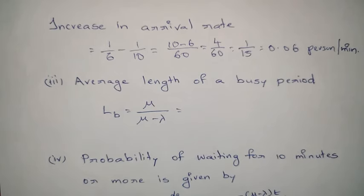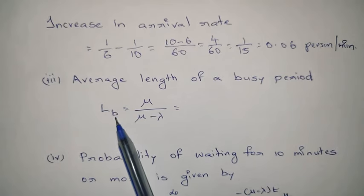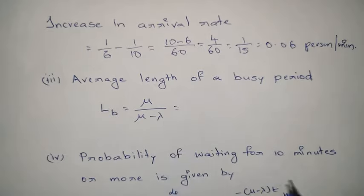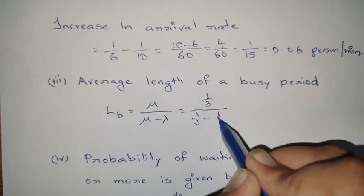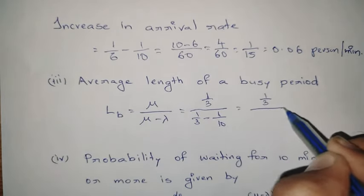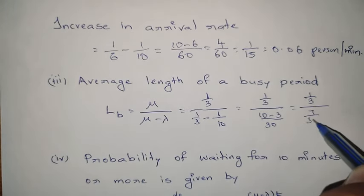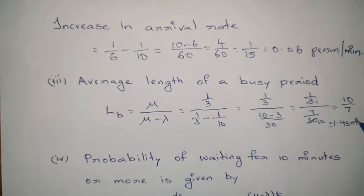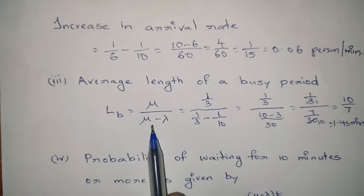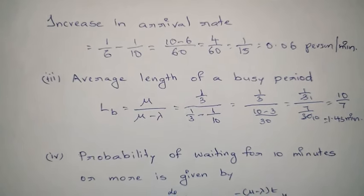For the third question — the average length of the busy period — we use the formula L_B = mu / (mu − lambda). Substituting: (1/3) / (1/3 − 1/10) = (1/3) / (7/30) = (1/3) × (30/7) = 10/7 ≈ 1.43 minutes. So the telephone booth is busy for an average period of 1.43 minutes.